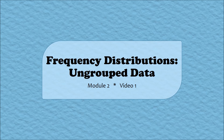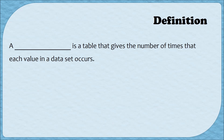Hello and welcome to the first video of the second module in our statistics videos. Module 2 is all about different ways of representing data visually. We're going to get started in this video with a table called a frequency distribution. A frequency distribution is a table that gives the number of times that each value in a data set occurs — it tells us how the frequencies are distributed in our data set.